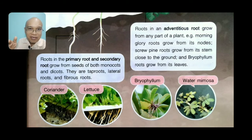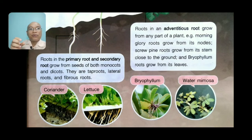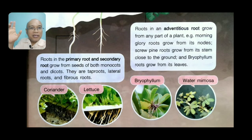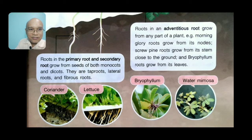Adventitious roots grow from any part of a plant — this is different from other kinds. For example, morning glory roots grow from its nodes, screw pine roots grow from its stem close to the ground, and bryophyllum roots grow from its leaves. You can see bryophyllum and water mimosa in the picture.